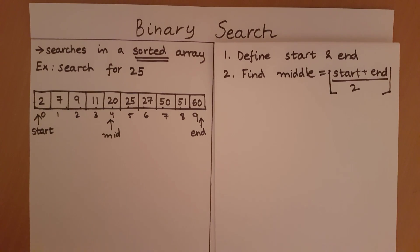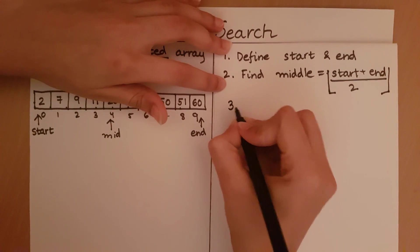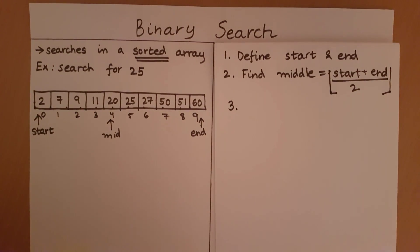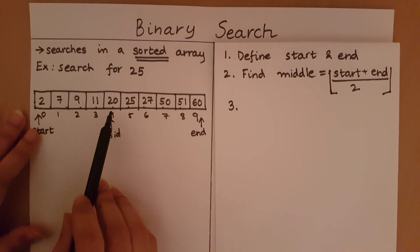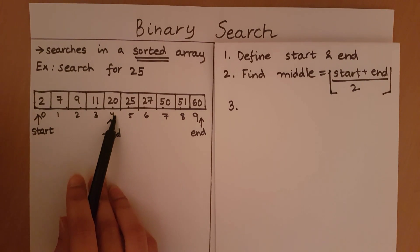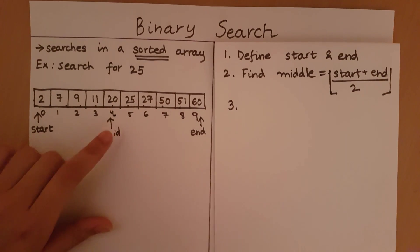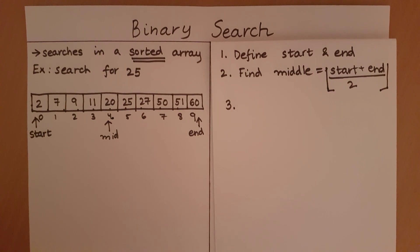The next step is to find where the element we are searching for will be placed with respect to the middle. My middle element is 20. Would I expect 25 to come to the left or the right of 20? Since it's a sorted array in ascending order, I expect the element 25 somewhere after index of 20. All elements preceding 20 will definitely be smaller than 20, so 25 must be present somewhere after the index where 20 was found.